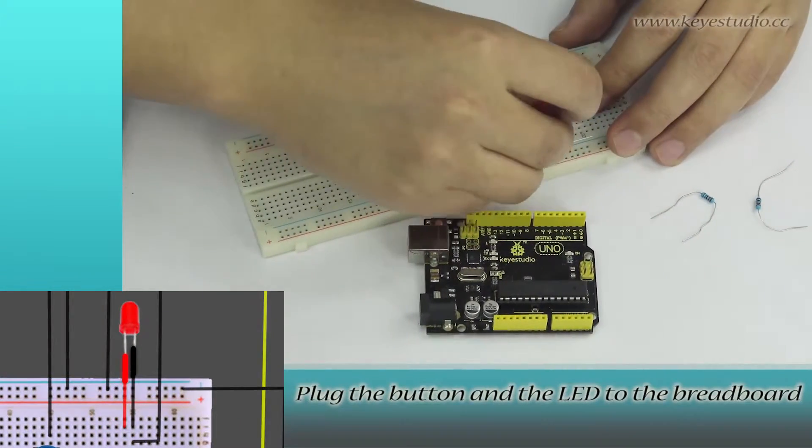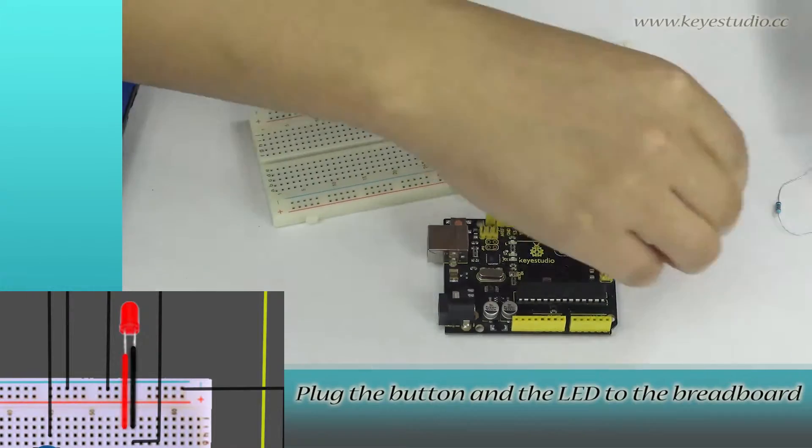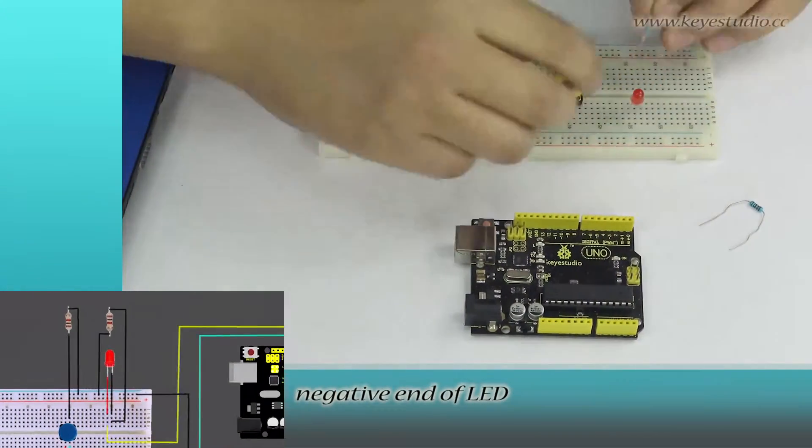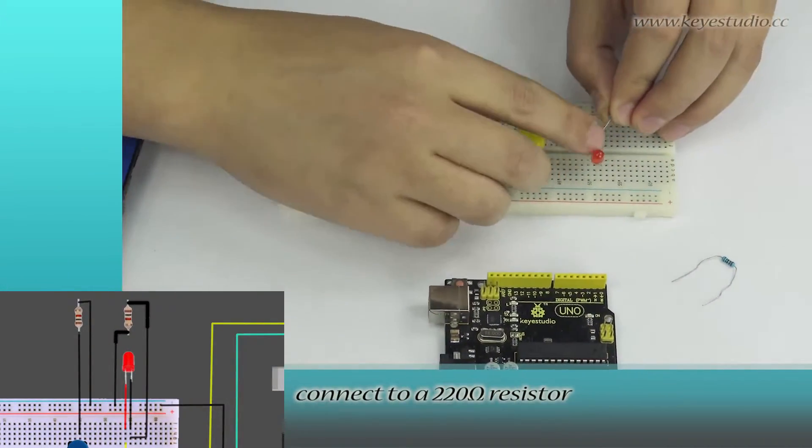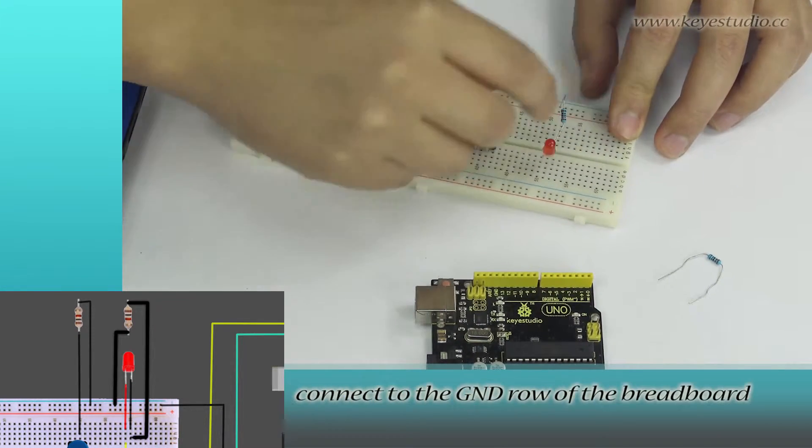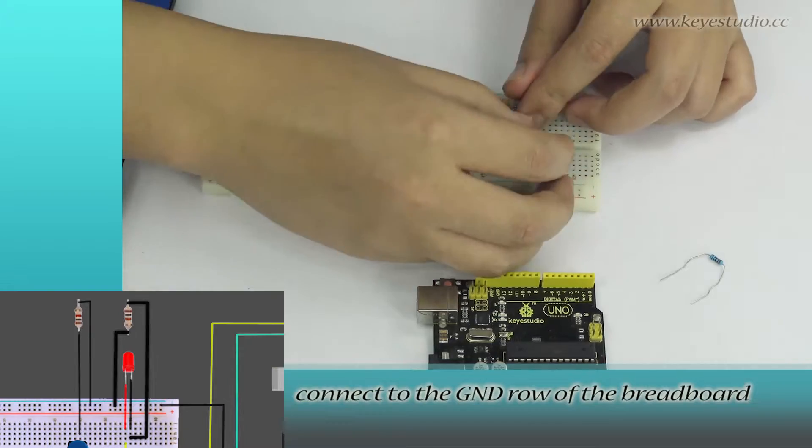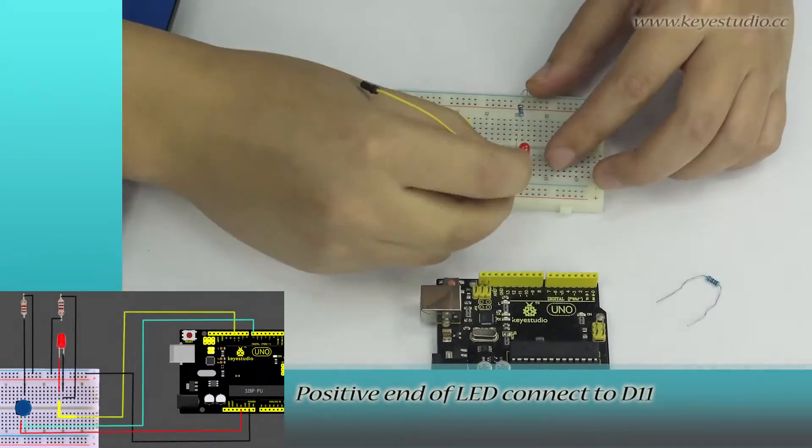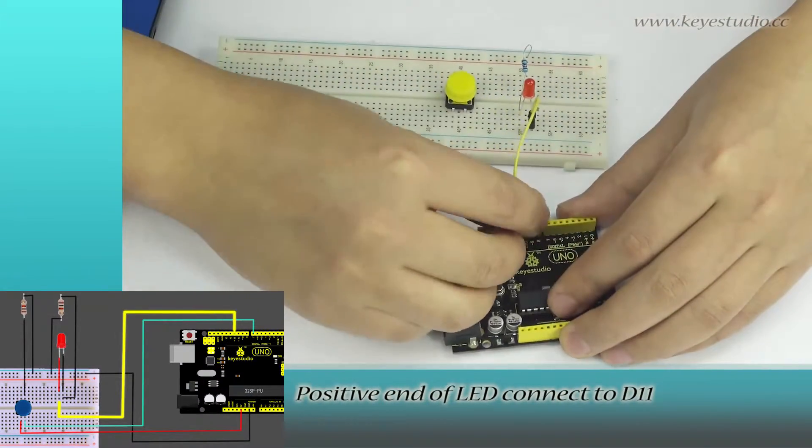Plug the button and the LED to the breadboard. Negative end of LED connects to a 220 Ohm resistor. The other end of the resistor connects to the GND row of the breadboard. Positive end of LED connects to D11.